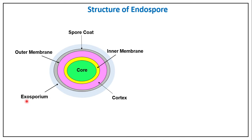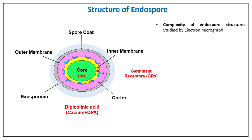Inside the core, a unique chemical called dipicolinic acid (DPA) is present, usually found in a complex form with calcium. This calcium-DPA complex is found inside the core region of the spore. At the inner membrane, germinate receptors are present — these bind specific germinants and allow spores to germinate when favorable conditions return.